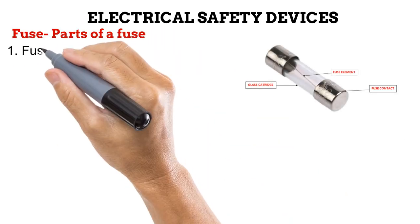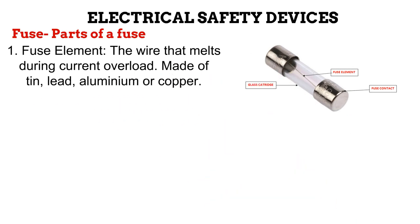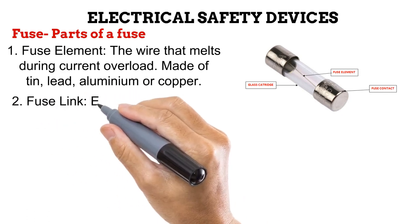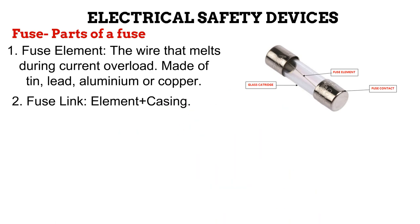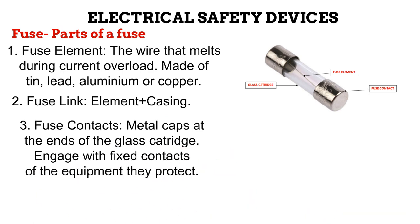Let us look at the parts of a fuse. First is the fuse element — the wire that melts during a surge or current overload, and can be made of tin, lead, aluminium, or copper. Next is the fuse link, which is the fuse element plus its casing. Most commonly, a glass cartridge serves as the casing. However, there are open fuse links, which have no casing. Fuses with a casing are better than open fuse links because open fuse links tend to produce an open spark when they melt. Lastly, the fuse contacts are the metal caps at each end of the glass cartridge that engage with the fixed contacts on the equipment they protect. Even though the fuse gets destroyed performing its protective function, it is far less expensive to replace a fuse than to replace damaged equipment.